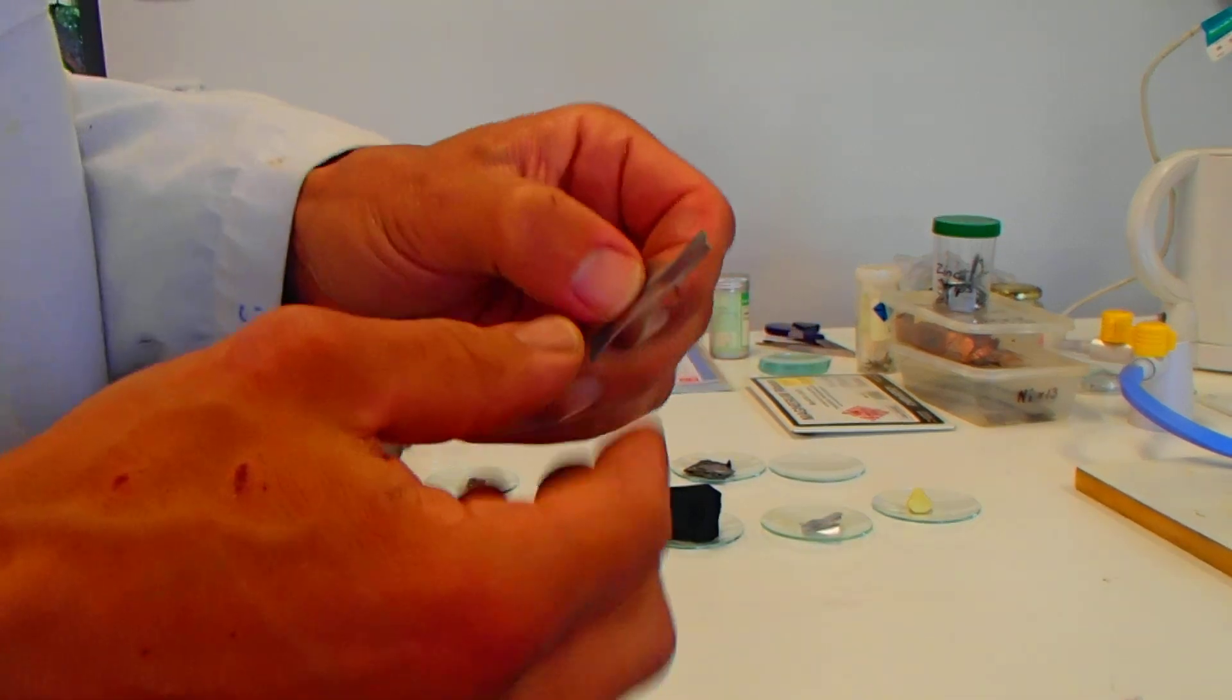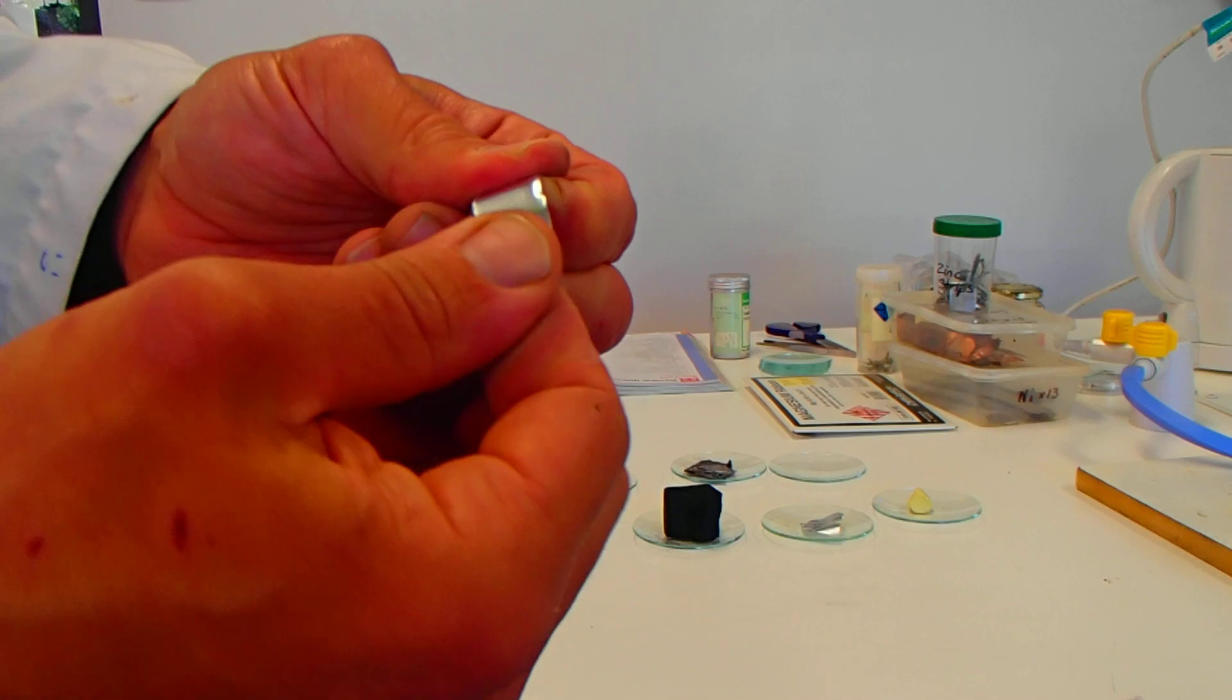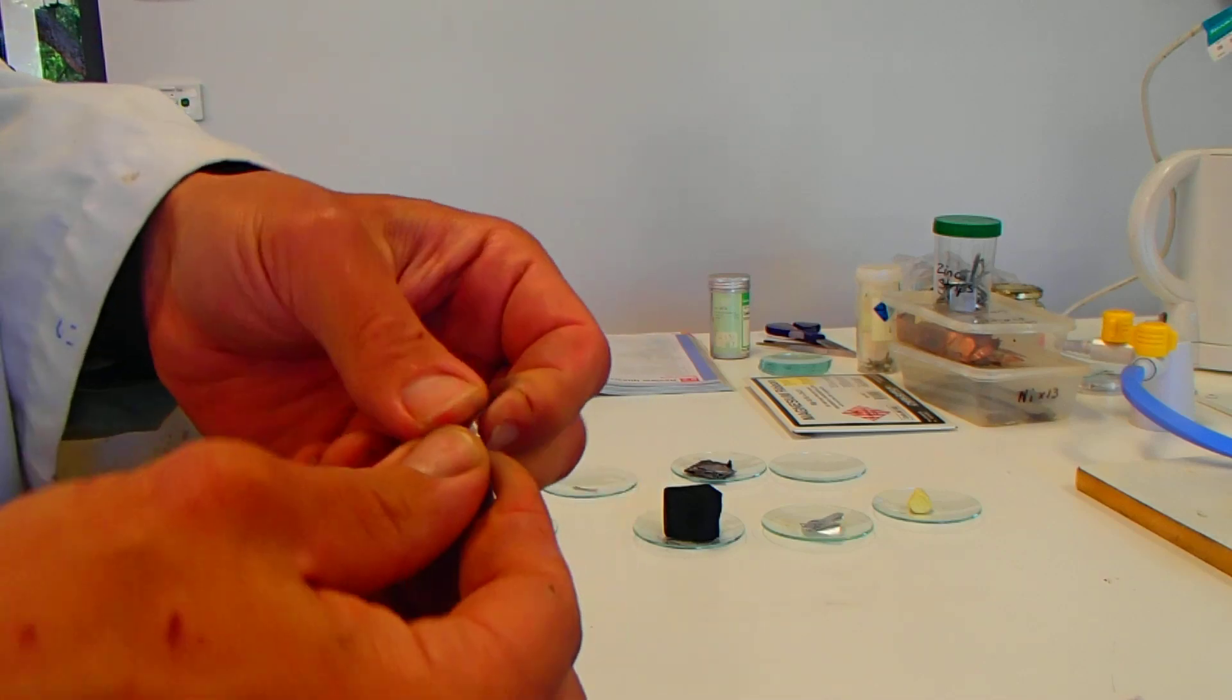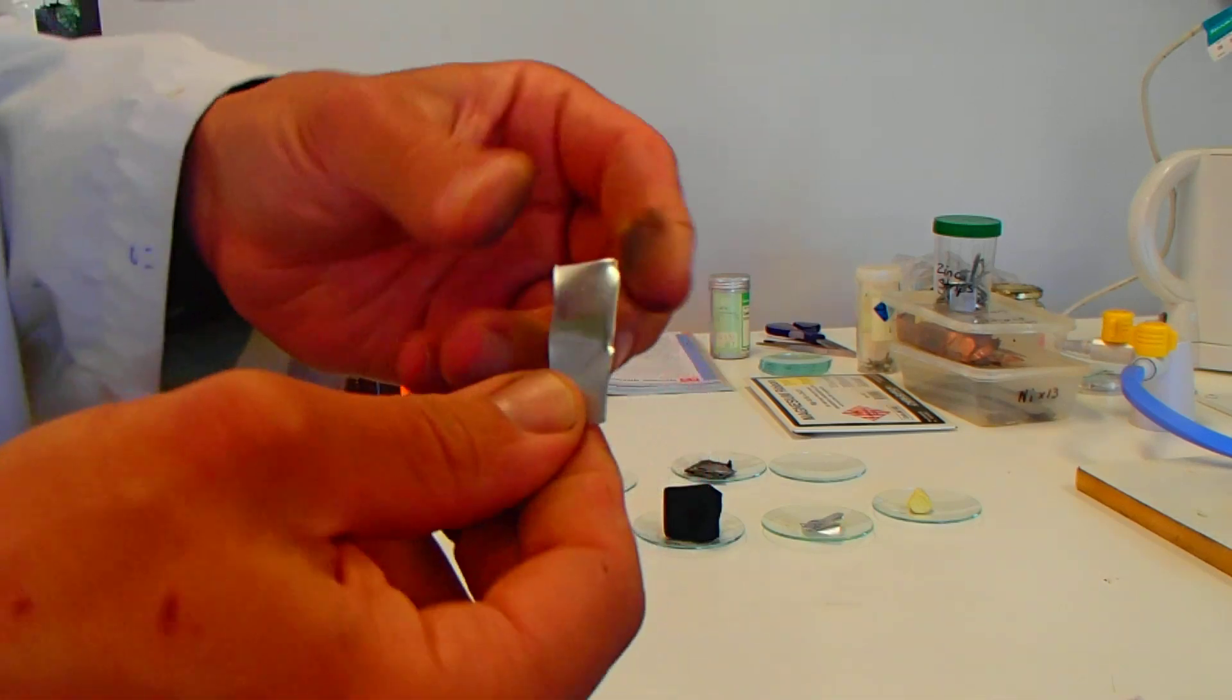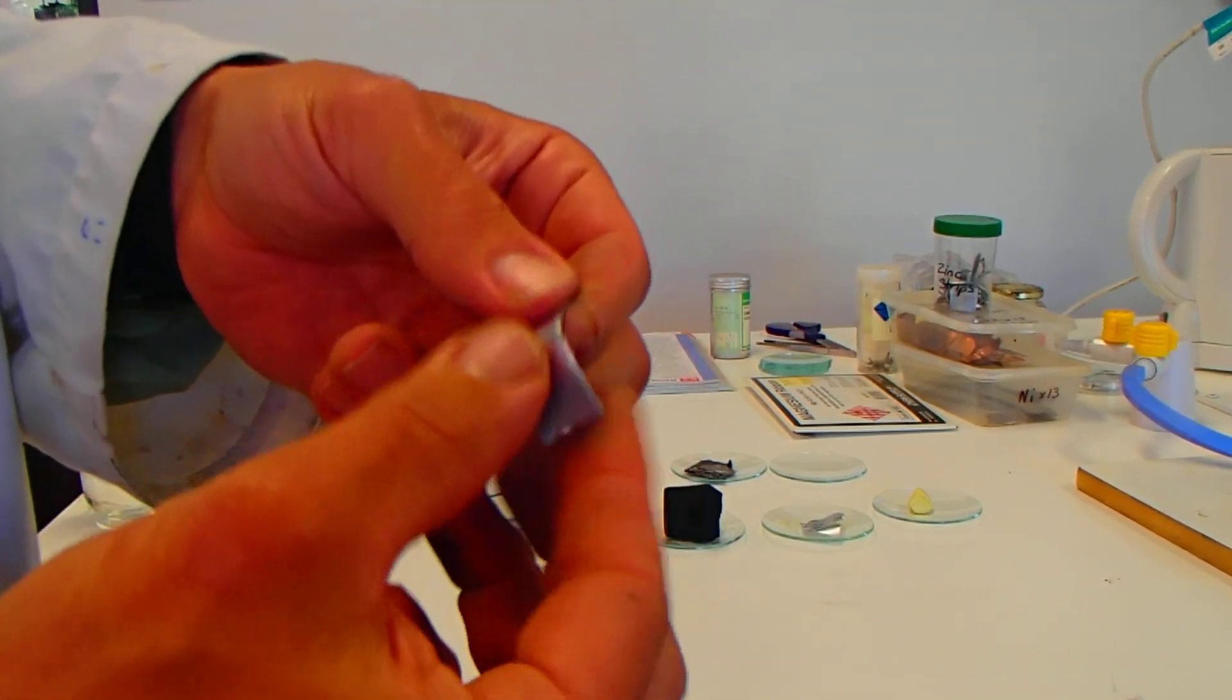We have the zinc sample. Let's have a look. Bendable, but it's quite a bit stiffer than the tin or the aluminum. I don't think I'll be able to rip this one. No. Definitely bendable, but keeps its shape. And that's quite strong.